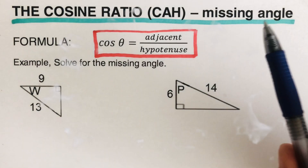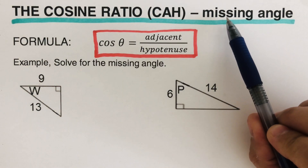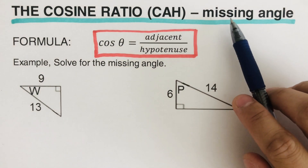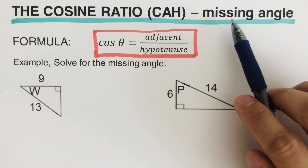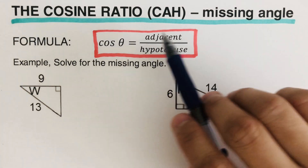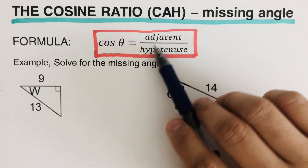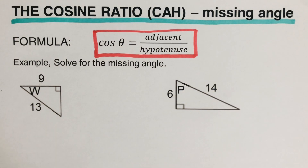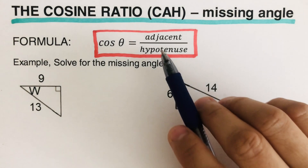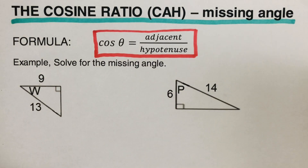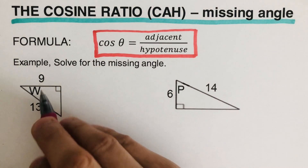Hello everyone, today we're going to be determining the missing angle of a right triangle using the cosine ratio. There is another video that talks about the missing side — I will put the link in the description box below. The formula for cosine is adjacent over hypotenuse. There is also another video teaching how to determine whether a side is adjacent, opposite, or hypotenuse — I will put that link in the description box below. Looking at this triangle, our first step is to label the sides.